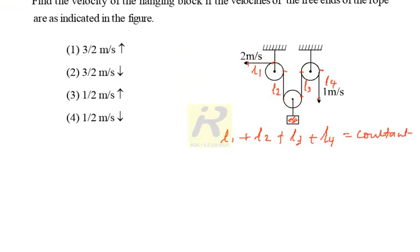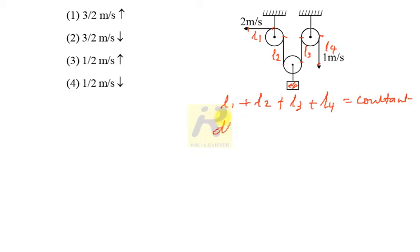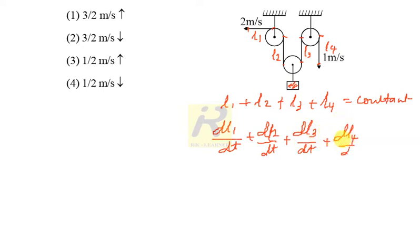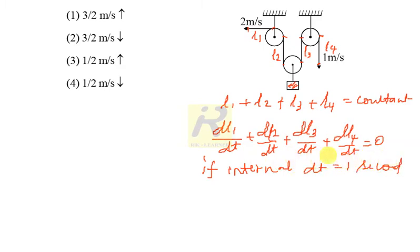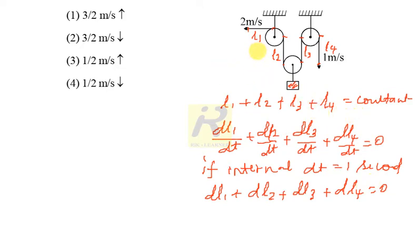Now if I differentiate this with respect to time: dL1/dt plus dL2/dt plus dL3/dt plus dL4/dt equals zero. If the interval dt is taken as one second, then I can write: dL1 plus dL2 plus dL3 plus dL4 equals zero.